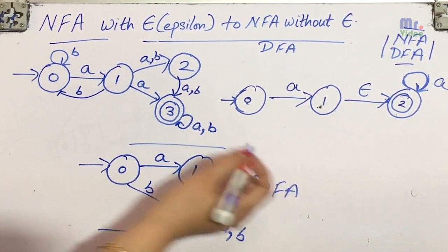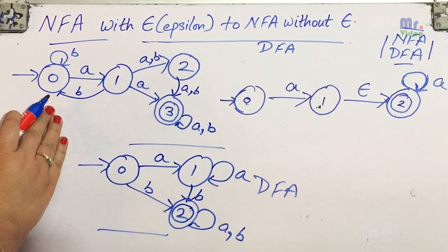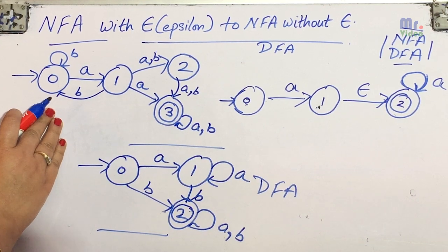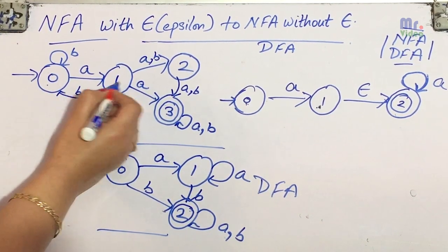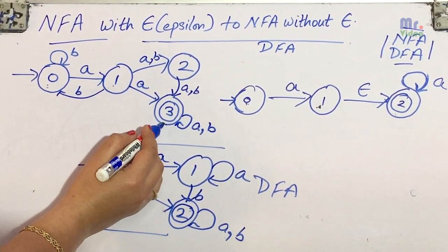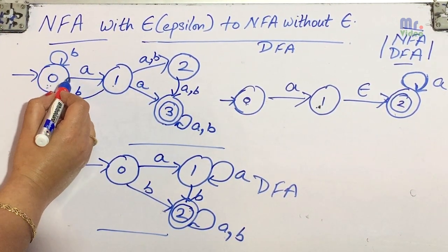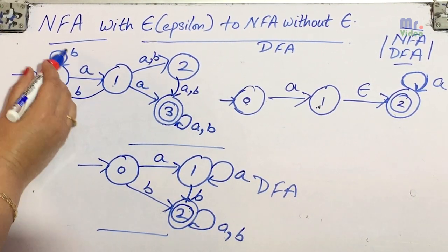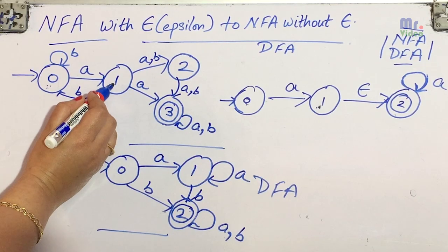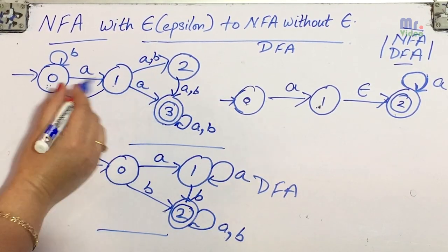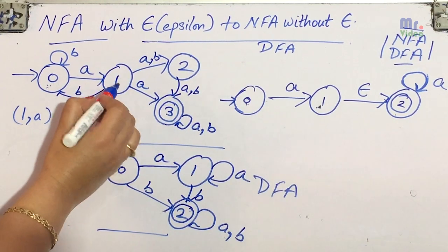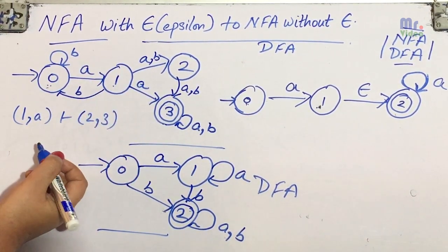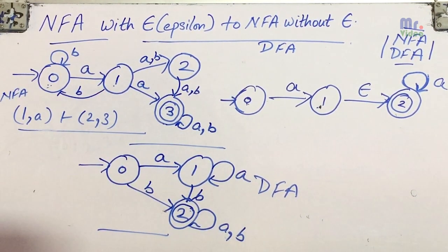Now if we talk about NFA — in this case there might be a possibility that from one state for one single input alphabet there may be more than one next state. Looking at this example with states 0, 1, 2, and 3: from state 0 with input 'a' the next state is 1; from state 0 with input 'b' the next state is 0; from state 1 with input 'a' the next states are both 2 and 3. Since from one state with input 'a' there are two next states {2, 3}, the transition cannot be determined uniquely — so this is an example of NFA.